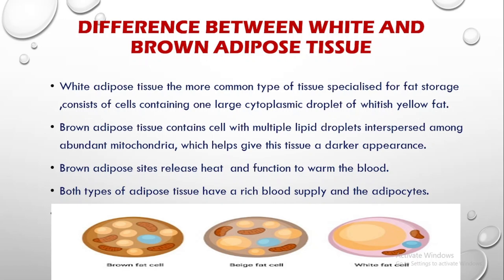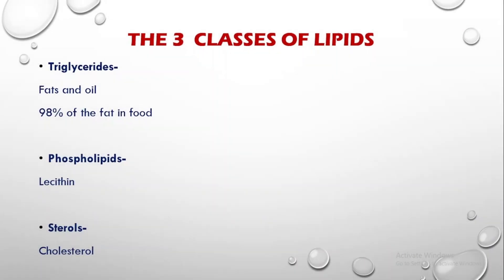The difference between white and brown adipose tissue: white adipose tissue is the more common type, specialized for fat storage, consisting of cells containing one large cytoplasmic droplet of whitish-yellow fat. Brown adipose tissue contains cells with multiple lipid droplets interspersed among abundant mitochondria. The dark brown structures are mitochondria, and this gives them their darker color. The brown adipocytes release heat and function to warm up the blood. Both types of adipose tissue have a rich supply of blood and adipocytes.